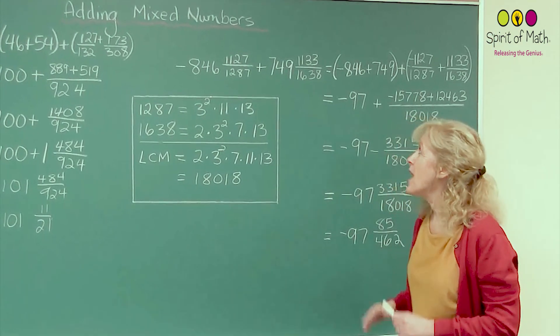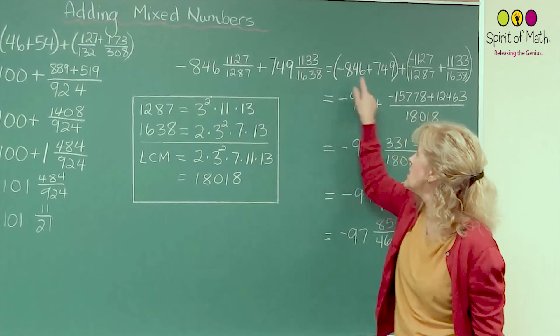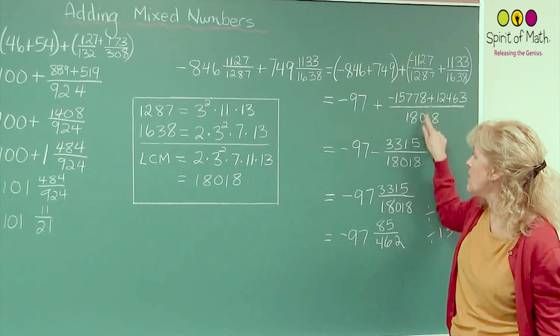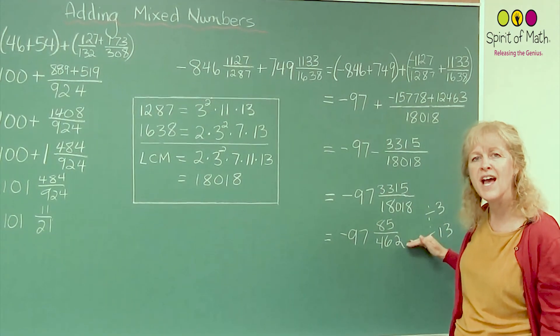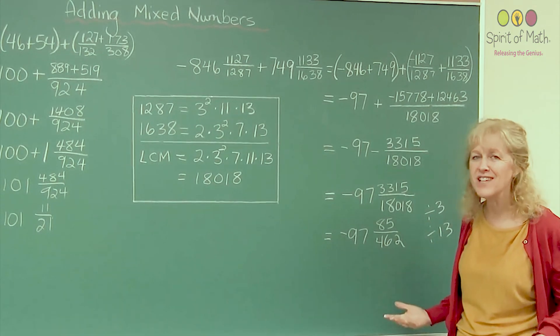So a summary again, combine the integer parts together, the fraction parts together. Work with them separately till you figure them out. Then you combine them and then you reduce. And that's it. Just follow those steps and you'll get them all.